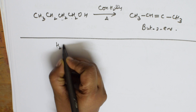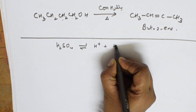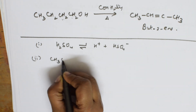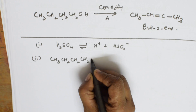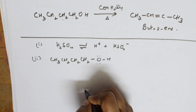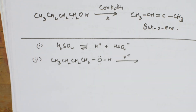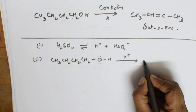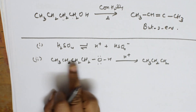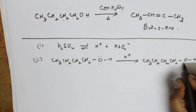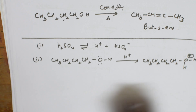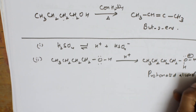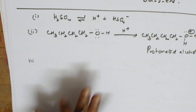Now let's see the reaction mechanism for this. Step one: sulfuric acid dissociates into H⁺ and HSO₄⁻. In the second step, I take the same alcohol CH₃CH₂CH₂CH₂OH and the H⁺ from sulfuric acid attacks the OH group. What we get is CH₃CH₂CH₂CH₂–OH₂⁺ — a protonated alcohol with a positive charge.